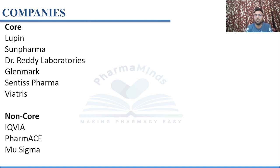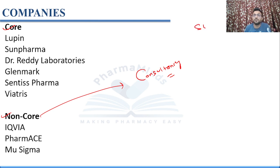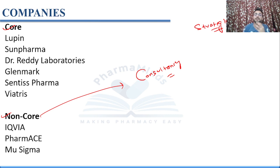Now, the companies visiting the campus include both core and non-core companies. Non-core companies are also known as consultancy companies. Core companies are those that make products like tablets, capsules, or any dosage form. Non-core or consultancy companies make strategies involved in drug development — from development through clinical trials to commercialization — they handle all the strategic planning.